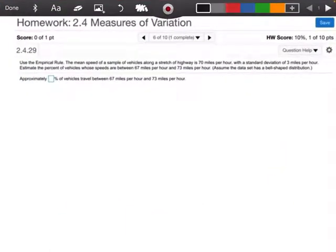All right, so guys, this is number six out of 2.4, and it says use empirical rule. The mean speed of a sample of vehicles along a stretch of highway is 70 miles an hour with a standard deviation of 3 miles an hour. Estimate the percent of vehicles whose speed is between 67 and 73 miles per hour. Assume the data shape has a bell-shaped distribution.